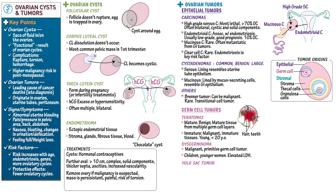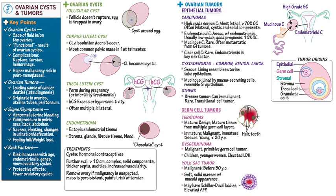Yolk sac tumors, also known as endodermal sinus tumors, are malignant and usually found in patients younger than 30 years old. They are soft, solid masses with a mucoid appearance. In histological samples, we may see Schiller-Duvall bodies, which comprise central vessels surrounded by fibroid tissue and tumor cells.